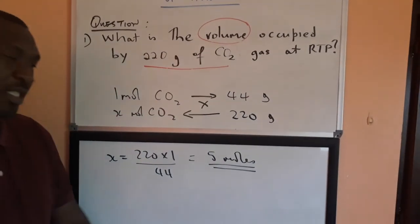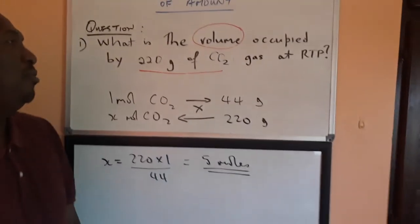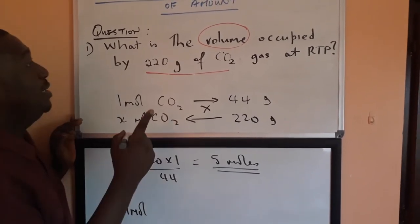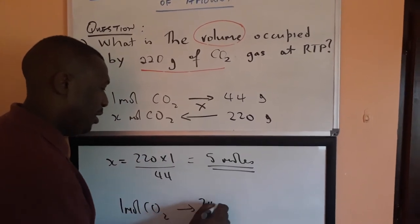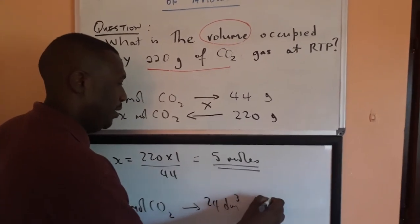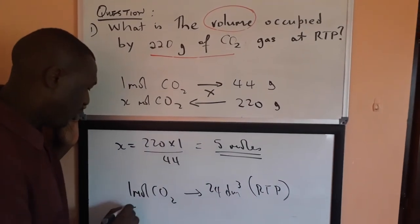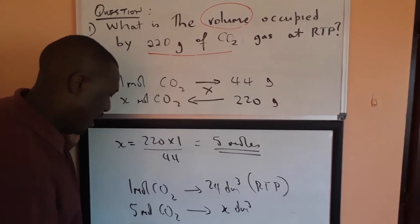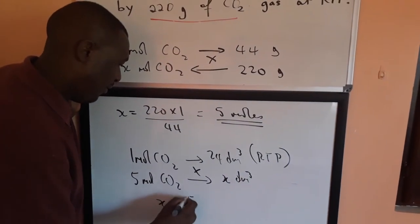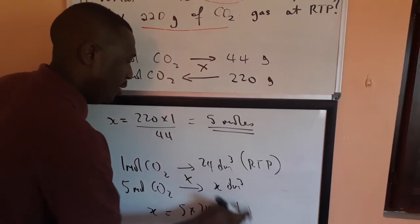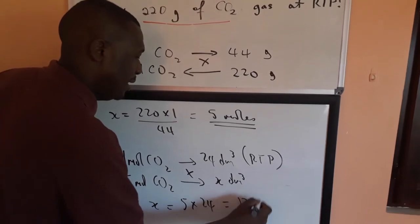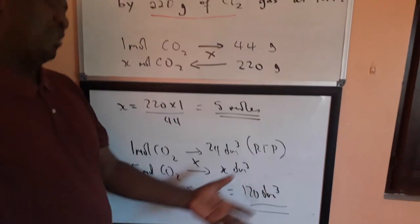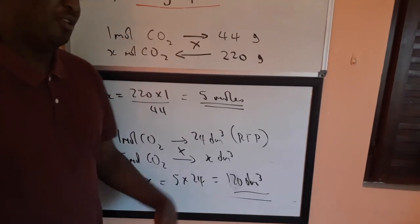Now we can calculate the volume, because there's a relationship between moles and volumes of gases. At RTP, one mole of any gas — in this case CO2 — occupies 24 decimetre cubed. Since we have 5 moles of CO2, that will occupy x dm³, and x = 5 × 24 = 120 decimetre cubed, just like in the other method. Do it both ways — you'll learn it even better.